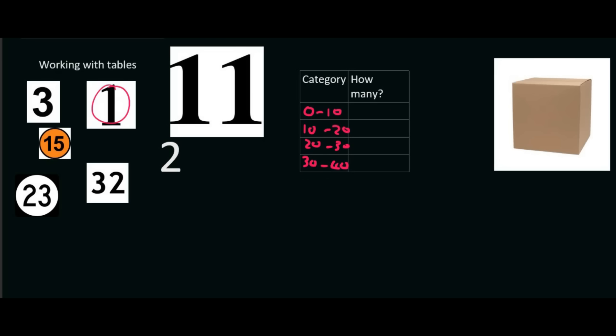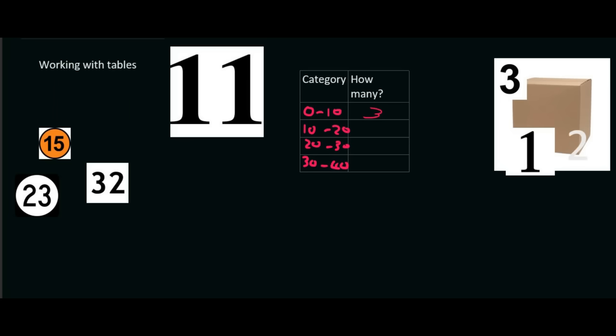So 0 to 10, well, that's going to be this one, it's going to be this one, and it's going to be this one. So how many are there? Three. So we're going to take each of those numbers and put them in the box. And so those three numbers have been packed neatly into that box.